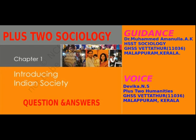Question No. 5. Identify the term used to study the relationship between personal problems and public issues. Who proposed this term? Explain with an example. Answer. The term used to study the relationship between personal problems and public issues is Sociological Imagination. C.W. Mills proposed this term.